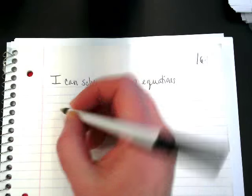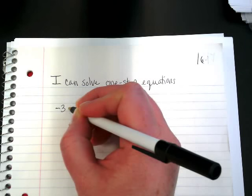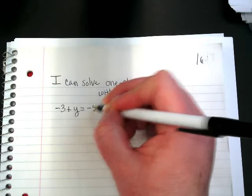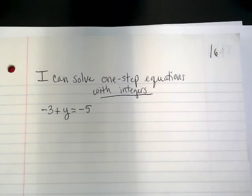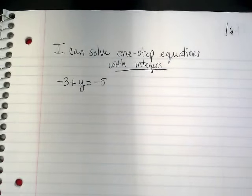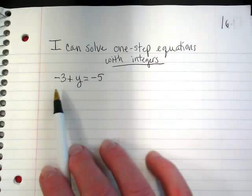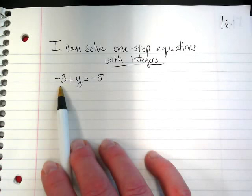I want you guys to write down negative 3 plus y equals negative 5. We want to get the variable by itself, right? And right now, there's a negative 3 with the variable. When I see a negative, I have to do the opposite, which is?